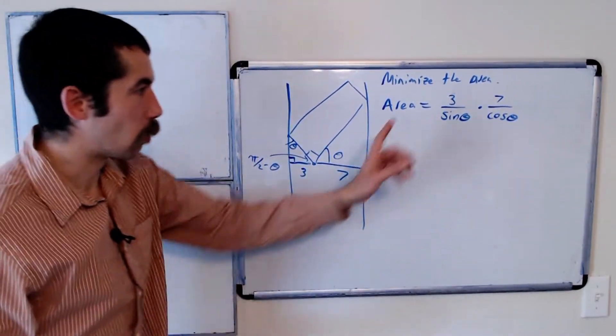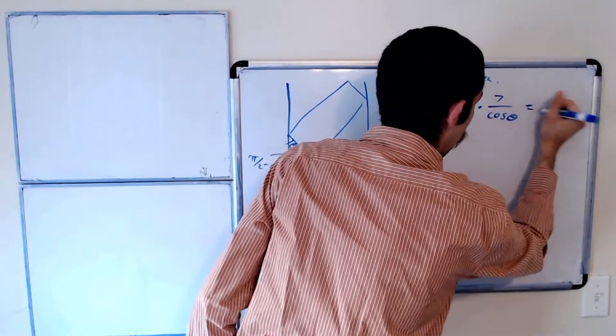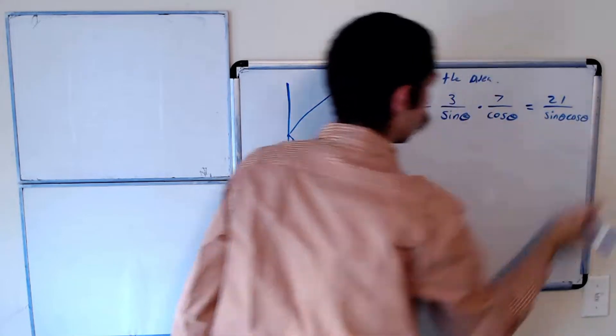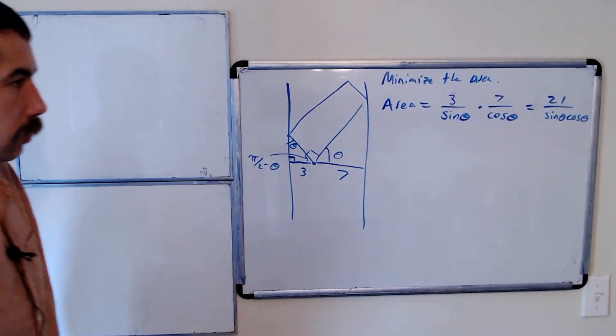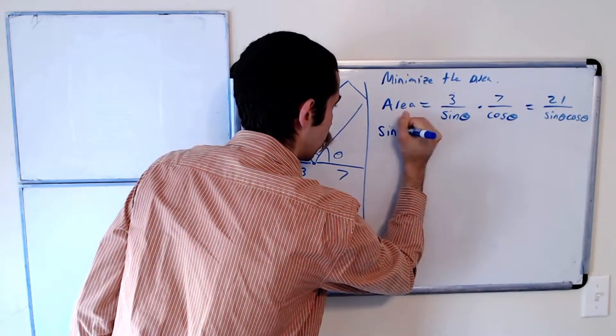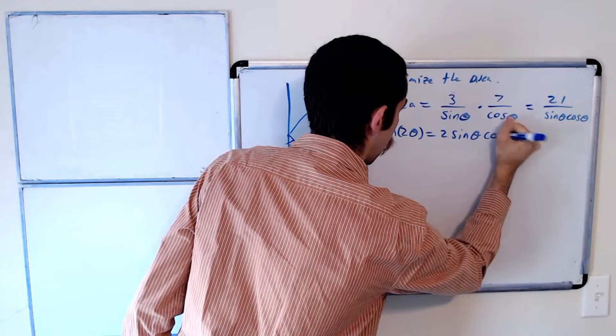So we want to minimize this area. This can be combined to 21 over sine theta cosine theta. Well, we know that sine of 2 theta is equal to 2 sine theta cosine theta.